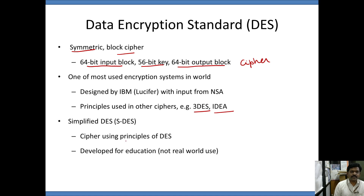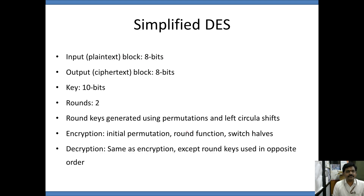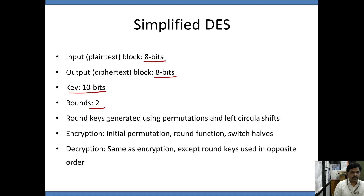The Simplified DES uses the principles of DES and it is meant for academic purposes. Simplified DES takes an 8-bit input of plain text, producing 8-bit of cipher text. The key size given to SDES is 10 bits. SDES operates in two rounds of operation. The round keys are generated with the help of permutation operations and left circular shifts. Encryption is done with the help of initial permutation, round functions, and switching the halves.